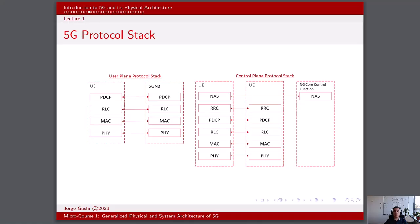Let's move to the control plane protocol stack. The control plane protocol stack is responsible for managing network signaling, control, and management functions. It handles tasks related to network establishment, maintenance, and control signaling between the user equipment and the core network elements. The control plane protocol stack consists of the following layers, similar to the user plane stack.